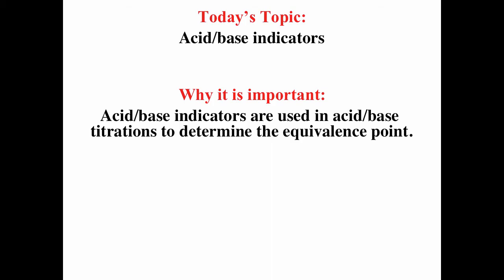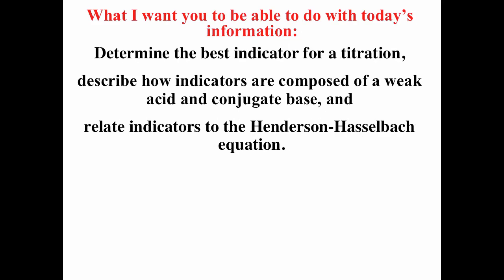This video is on acid-base indicators. Acid-base indicators are used in acid-base titrations to determine the equivalence point. After watching this video, you should be able to determine the best indicator for a titration, describe how indicators are composed of a weak acid and conjugate base, and because they are different colors, use the Henderson-Hasselbalch equation to better understand acid-base indicators.